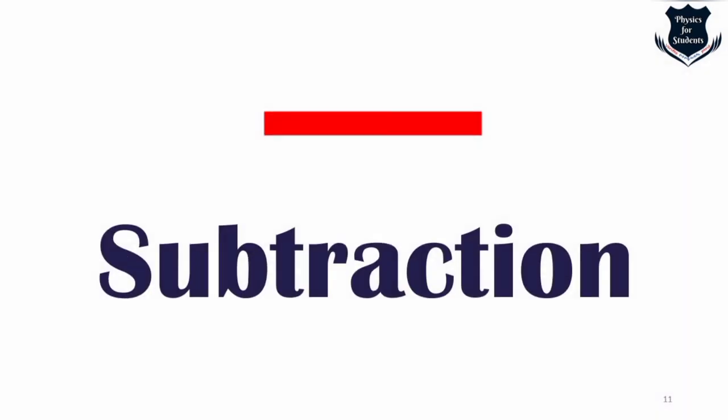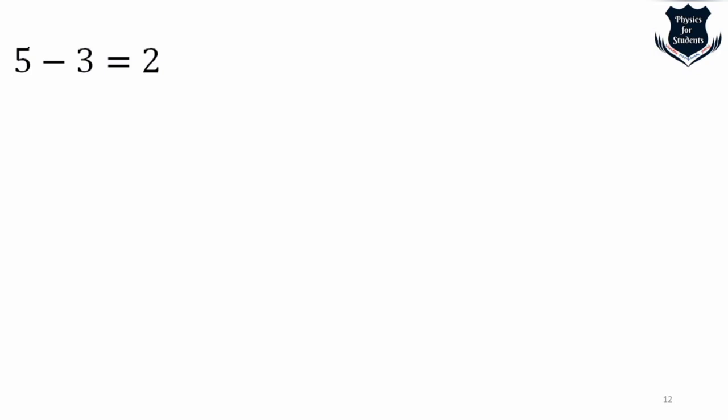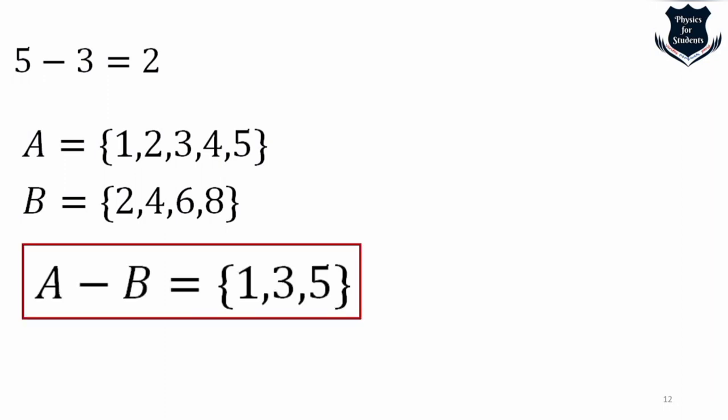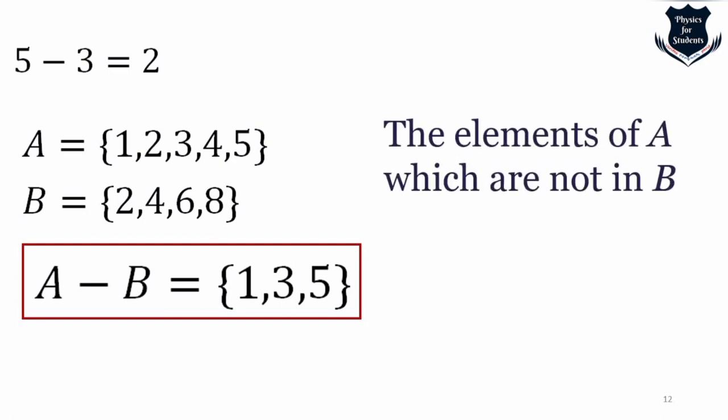We come to subtraction, the second arithmetic operator. If we have set A with certain elements and set B, we can subtract one set from the other: we include 1 (not in B), skip 2 (in B), take 3 (not in B), discard 4 (in both), and include 5 only if it is in A but not in B — representing the elements of set A which are not in set B.